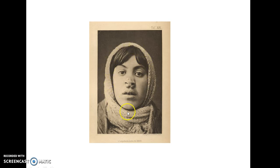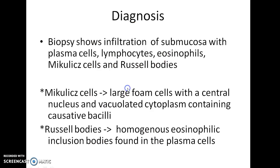This is how a patient with Rhino Scleroma presents. For diagnosis, biopsy shows infiltration of the submucosa with plasma cells, lymphocytes, eosinophils, Mikulicz cells, and Russell bodies.